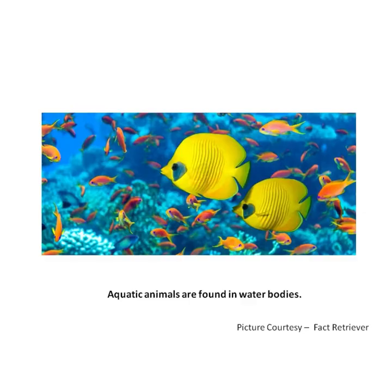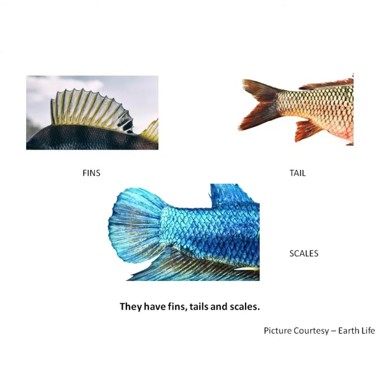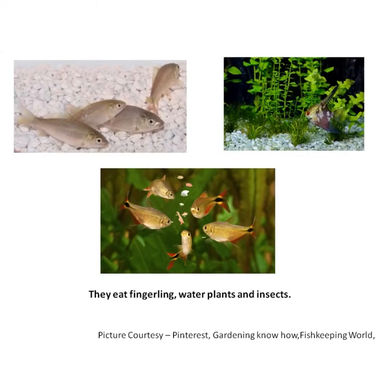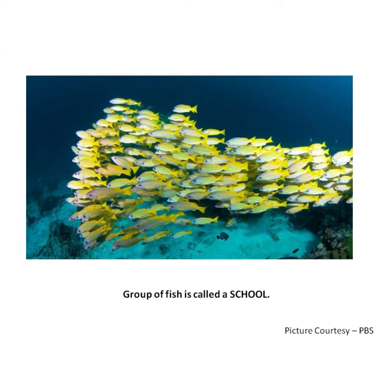Now let's learn conversation sentences on water animals. Aquatic animals are found in water bodies. They have fins, tails, and scales. They are of different colors and sizes. They eat fingerlings, water plants, and insects. A group of fish is called a school.